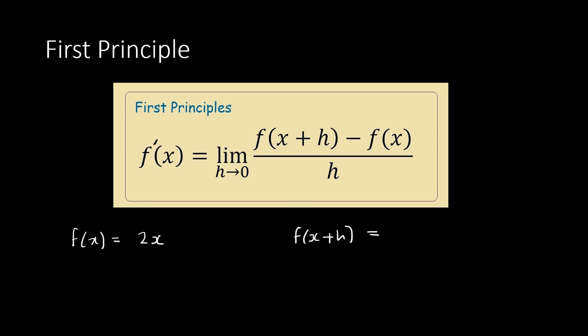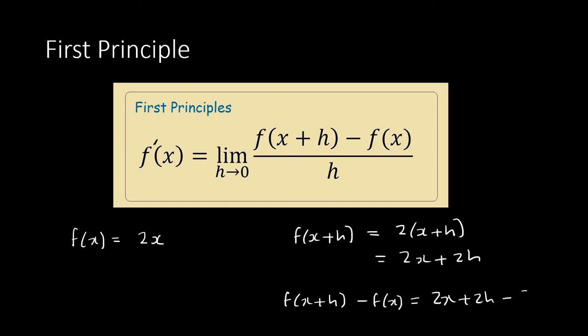For example, if f(x) = 2x, this is the function of x. Now for f(x+h), where there is x you replace it with x+h, so you get 2(x+h) = 2x + 2h. Then f(x+h) minus f(x) gives 2x + 2h minus 2x, which equals 2h.